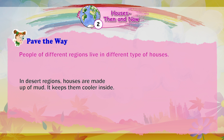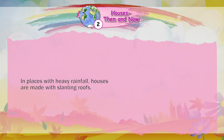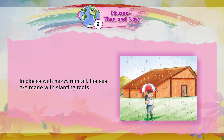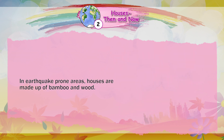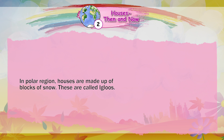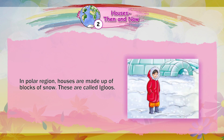In desert regions, houses are made up of mud — it keeps them cooler inside. In places with heavy rainfall, houses are made with slanting roofs. In earthquake-prone areas, houses are made up of bamboo and wood. In polar regions, houses are made up of blocks of snow. These are called igloos.